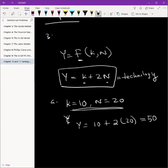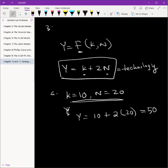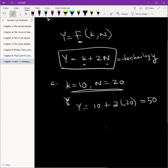So working with 20 workers and 10 units of capital, this economy can produce 50 units of output. That's the first part.